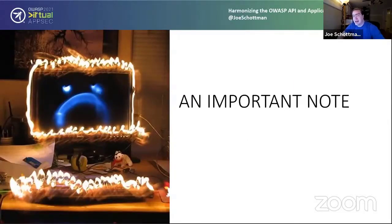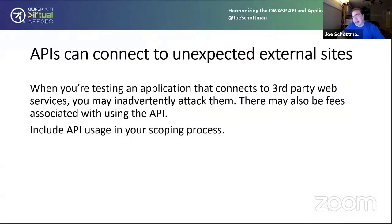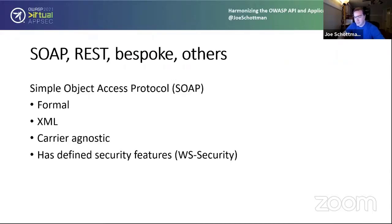An important note: if you're doing tests involving APIs — and almost all tests do — APIs connected to an external site could mean that if you start doing SQL injection on an application you're authorized to test, and it sends those requests to a third-party API, you may be running an unauthorized test against that third party. There are legal issues with sending malicious traffic to someone else's API, and in some cases there could be fees. A typical DAST test can involve hundreds of thousands of requests, which adds up. When scoping a new application, make sure you identify any external or internal third-party APIs that may require additional notification.